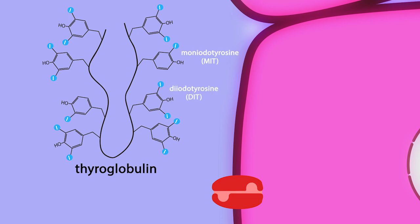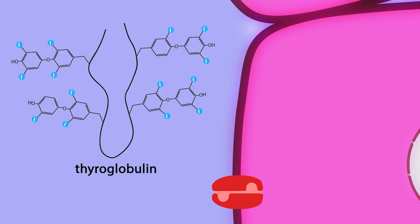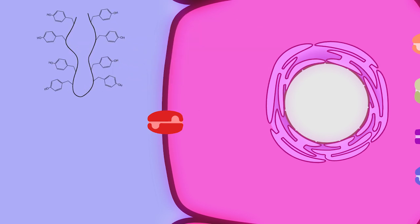Iodination of tyrosyl residues causes the thyroperoxidase to conjugate neighboring tyrosyl residues, resulting in three different types: T4, T3, and RT3. RT3 is biologically inactive. The thyroglobulin protein involved in this process was initially synthesized in the endoplasmic reticulum of the follicular cells and secreted into the colloid space via exocytosis.